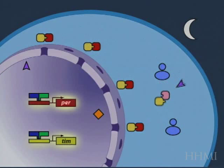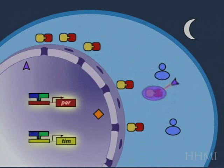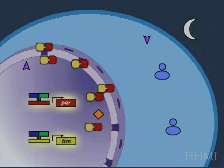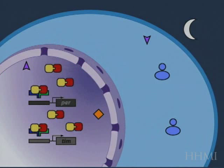And if the period protein which is produced gets together with its partner timeless and forms a heterodimer, then the heterodimer is resistant to the effects of the double-time kinase. So, that's really the distinction between the protein which is degraded and the protein which is accumulated.